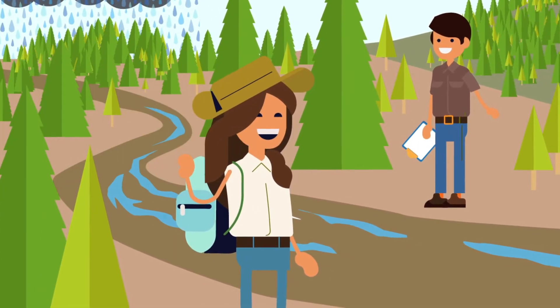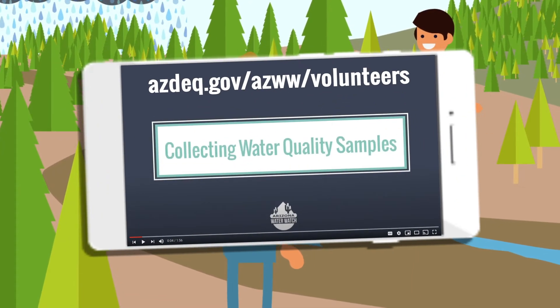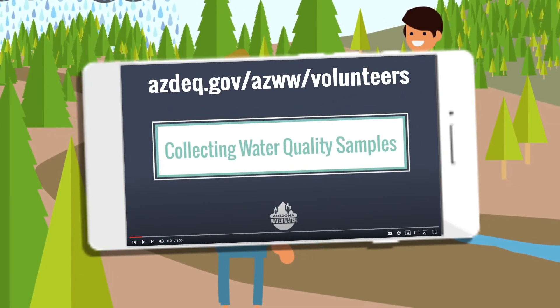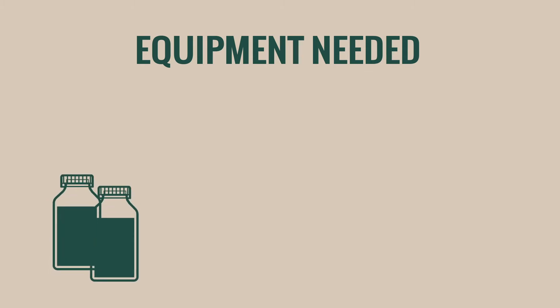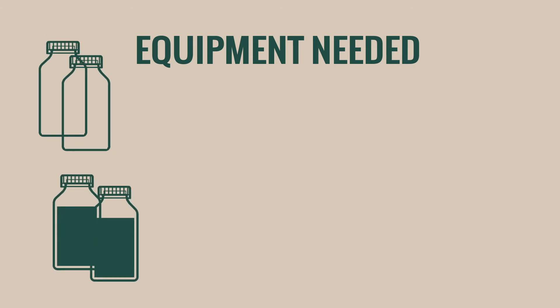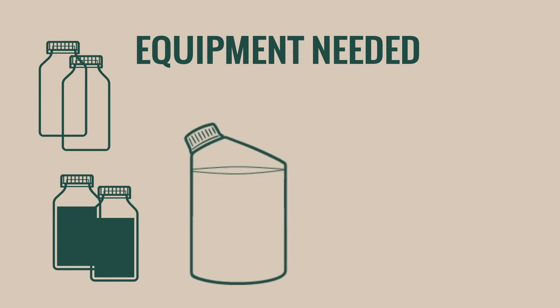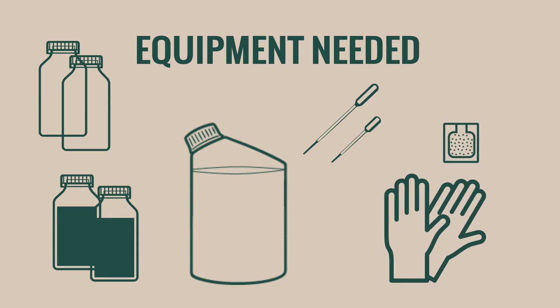Use the same standard process as described in the Collecting Water Quality Samples video in your online volunteer toolkit. When you're back at the lab, you'll need the following: two full 100 milliliter E. coli samples, two empty new 100 milliliter sampling bottles, deionized water, two pipettes with bulbs or rollers (10 milliliters and 1 milliliter), E. coli media, gloves, and a marker.